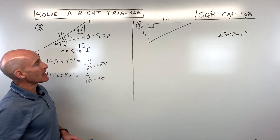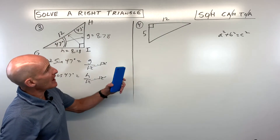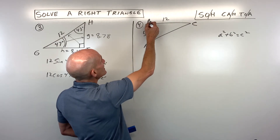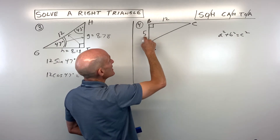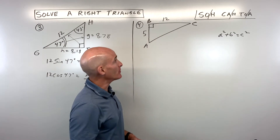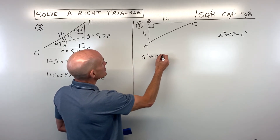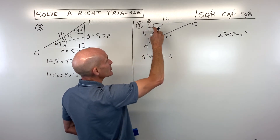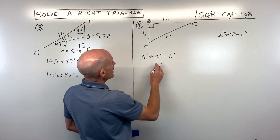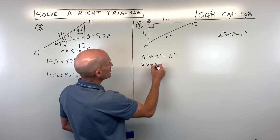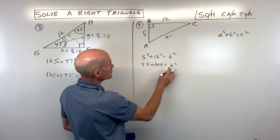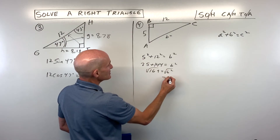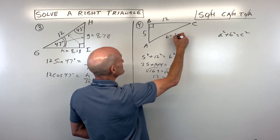You've solved the triangle — all angles and sides found. For Example 4, we're given two sides, so we use the Pythagorean theorem to find the third. We have 5 squared plus 12 squared equals b squared, which gives 25 plus 144 equals 169, so b squared equals 169. Taking the square root, b equals 13. That's the missing hypotenuse.